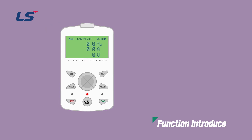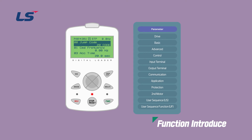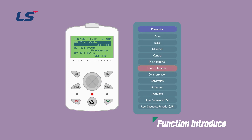There are 12 groups in the parameter mode where parameters can be set. When moving between groups, you can move by pressing the button in the right direction. The group types include drive group, basic group, advanced group, control group, input group, output group, communication group, application group, protection group, and if you press the right arrow key again, it returns to the drive group.